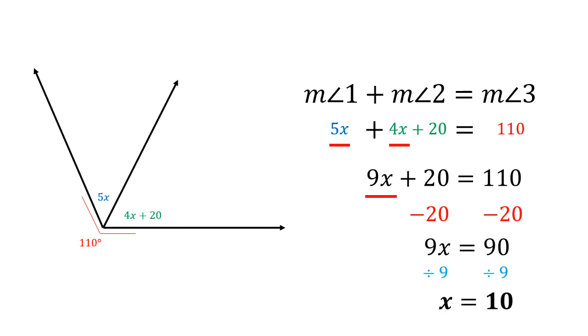If we needed to know what those angle measurements are, all we have to do is plug in that 10 into the 5x and the 4x plus 20 to figure out what those angle measures are. That's the angle addition postulate in a nutshell. Stay tuned for the next video on angle bisectors.